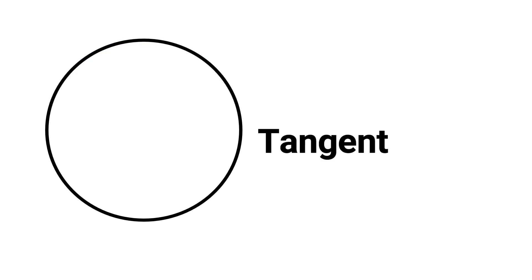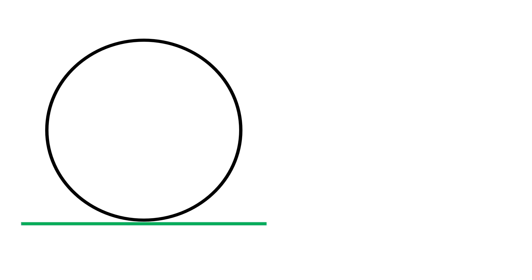A tangent to a circle is a straight line that touches the circle at only one point. This line is tangent to the circle and touches the circle at this point.